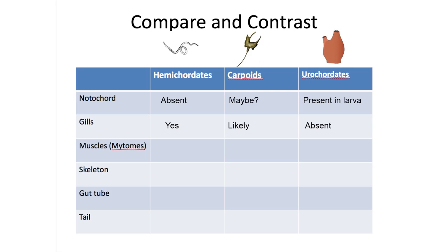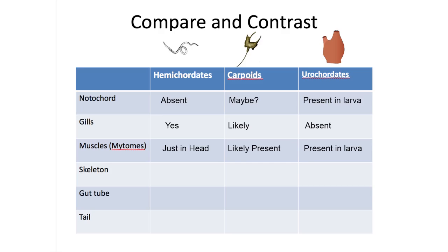Gills are found in hemichordates and believed to be present in carpoids, but are absent in euchordates. Muscle tissue is found in hemichordates, but it's unsegmented in the head. Muscles are thought to be present in carpoid appendages and appear to be present along the larval tail of euchordates.